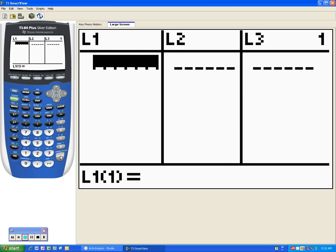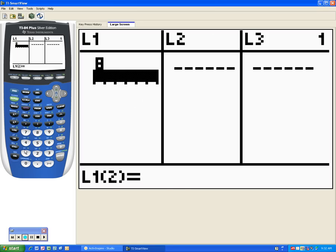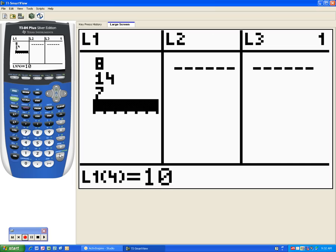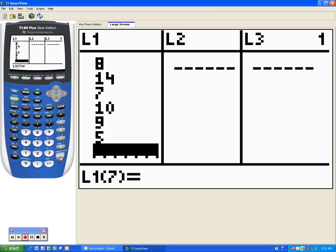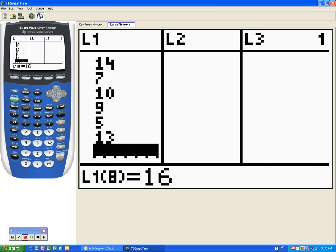Okay, now we're gonna type the numbers as you see them. Order does not matter. So we've got 8, 14, 7, 10, 9, 5, 13, and 16 from the list that we had on the first screen.